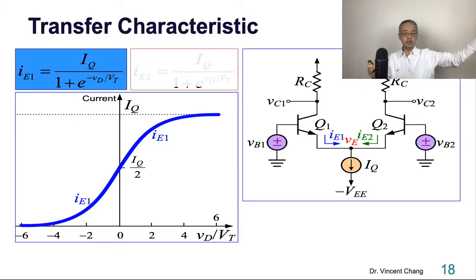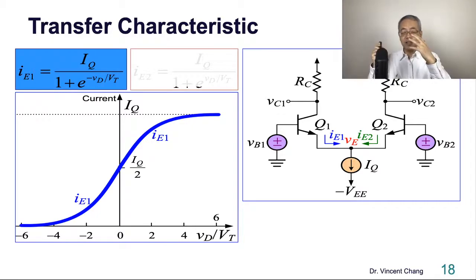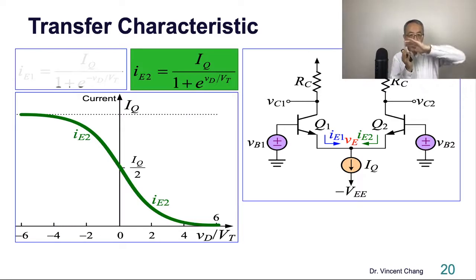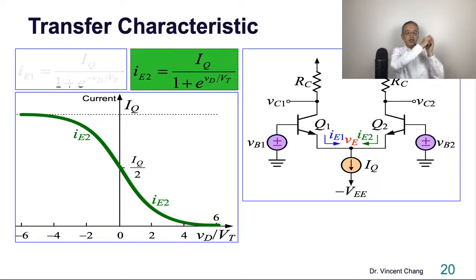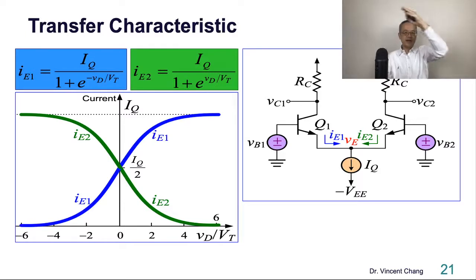This is the current on the left-hand side. Because of circuit symmetry, you can reason out the other side: the currents are symmetric. Because the sum is constant, when IE1 grows exponentially IE2 decays exponentially, and vice versa. So the two curves together look like a big X.